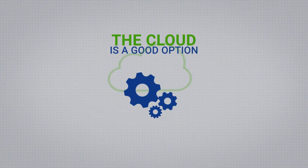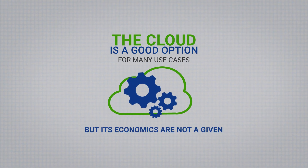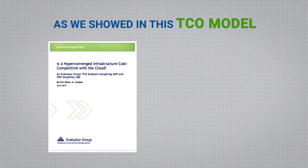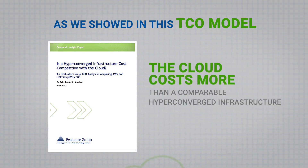So what did we learn? The cloud assumption is obsolete. Compared with a hyperconverged solution, the cloud doesn't cost less. And the economics of HCI just get better as you scale, which is a good thing since these clustered systems are designed to scale easily and in manageable increments — these really are pay-as-you-grow solutions. The cloud is a good option for many use cases, but its economics are not a given. As we show in this TCO model, the cloud costs more than a comparable hyperconverged infrastructure like HPE SimpliVity.